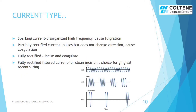The different effect is caused by a change in the current type. A fulguration is caused by a sparking current with disorganized high frequency. A partially rectified current pulses but does not change direction, causing coagulation. A fully rectified current causes incision and coagulation. A fully rectified filtered current is used for clean incision, which is the choice for gingival recontouring.